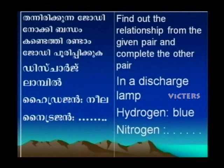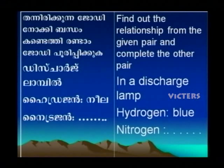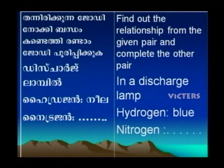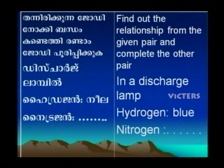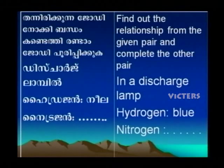Find out the relationship from the given pair and complete the other pair. In a discharge lamp, hydrogen gives a blue color and nitrogen gives a different color.